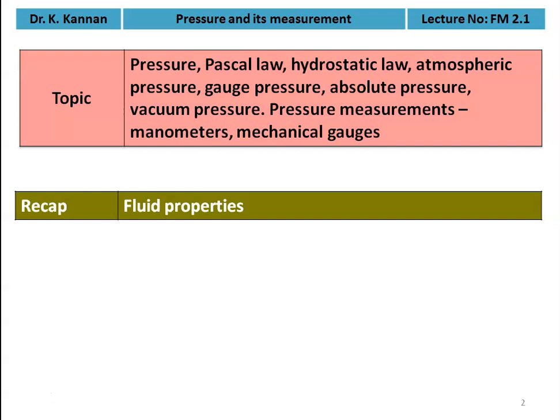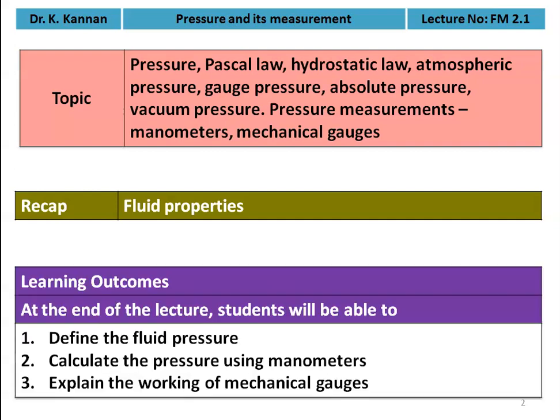Pressure is the next property. It is a very important parameter in fluid mechanics calculations. In this chapter, we are going to discuss pressure and its measurements. The learning outcomes: at the end of the lecture, the student will be able to define fluid pressure, calculate pressure using manometers, and explain the working of mechanical gauges used for pressure measurement.